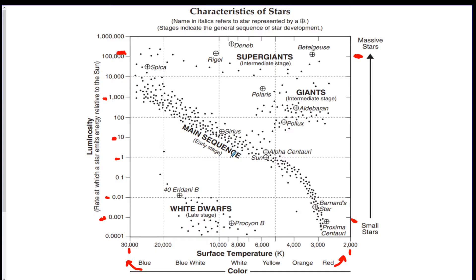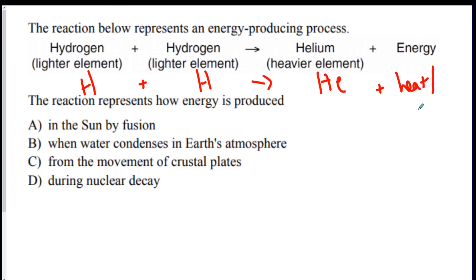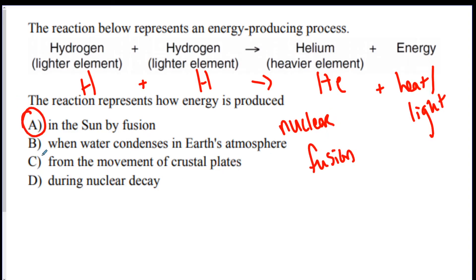Let's do some questions. Number one: the reaction below represents an energy-producing process — hydrogen plus hydrogen gives helium plus energy. This is the reaction for nuclear fusion, and nuclear fusion happens in the center of the star. So A would be your answer for that one.